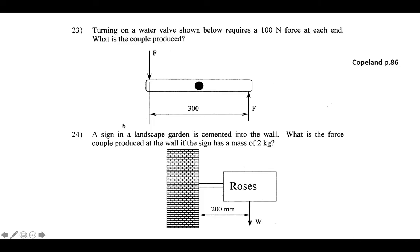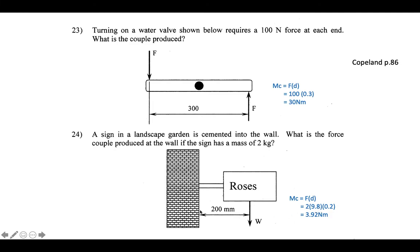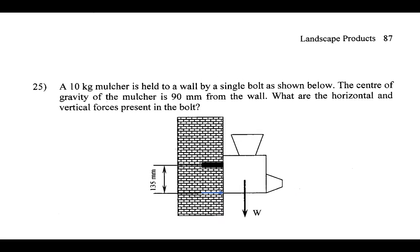Moving on to chapter review questions. Question 23: turning on a water valve requires 100 Newtons of force at each end and the distance between them is 0.3 metres, so the moment couple is 100 times 0.3 equals 30 Newton metres. Question 24: a sign with a sun has a mass of 2 kilograms, so 2 times 9.8 equals 19.6 Newtons, and the distance from the wall to the centre of mass is 0.2 metres, giving a moment couple of 3.92 Newton metres.